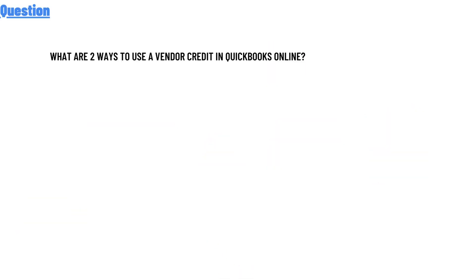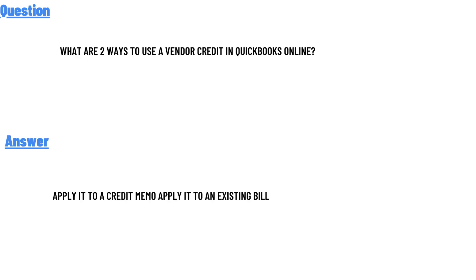Our today's question is: what are two ways to use a vendor credit in QuickBooks Online? The correct answer is: apply it to a created memo, apply it to an existing bill. That is the answer to the question.